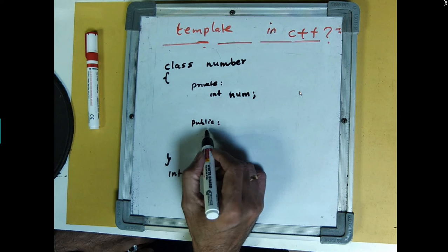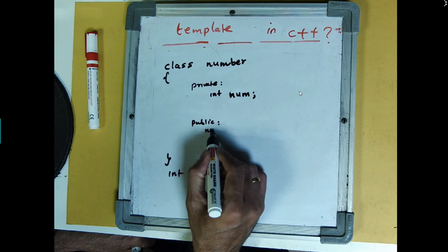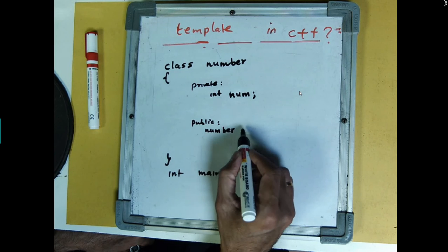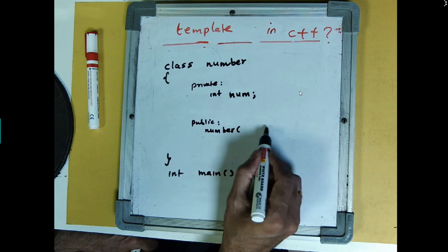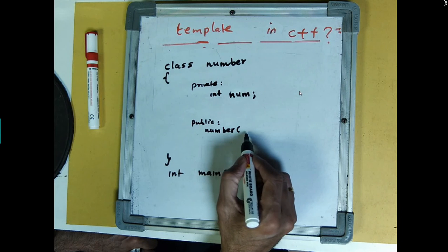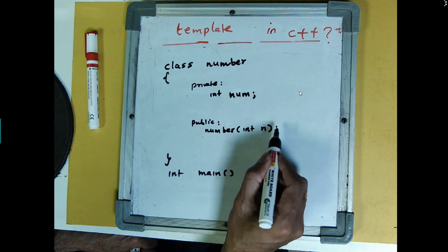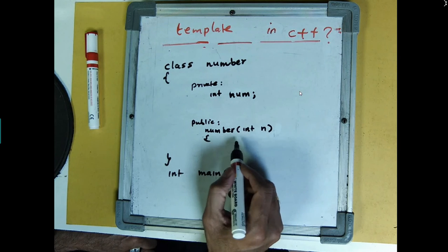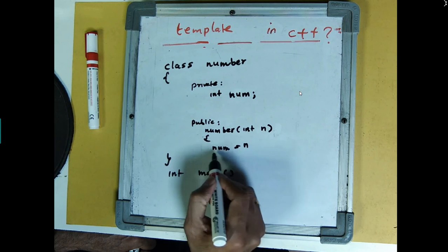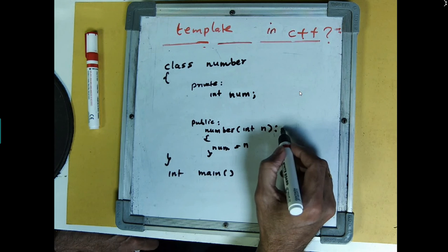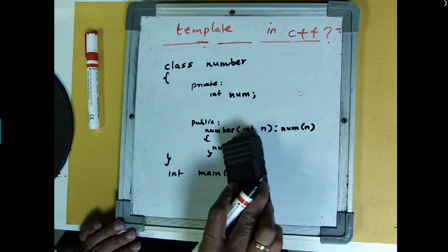And you know that when you write a public constructor in public, you usually give the same name after that. In the same name, if it is a constructor with arguments, then you can also give integer n. Then you can initialize n is equal to num. So instead of doing this, we can also put a colon and say that num n. Then it is same thing.